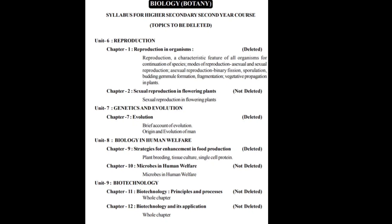Unit 8 has Biology in Human Welfare. Chapter 9 has 'Strategies for Enhancement of Food Production' and this chapter is completely deleted, as it contains topics like plant breeding, tissue culture, and single cell protein. However, Chapter 10 'Microorganisms in Human Welfare' is not deleted — the whole chapter is present, so you have to study microbes in human welfare.